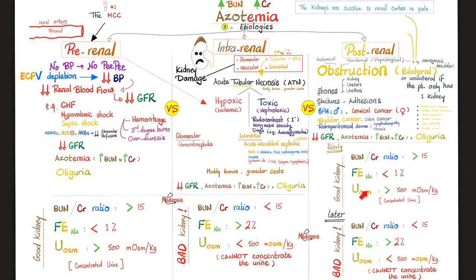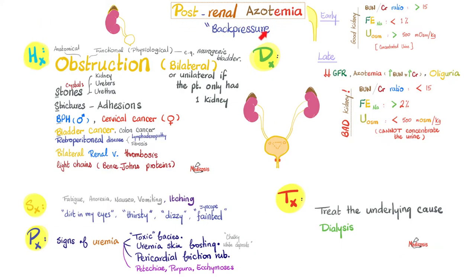Early on, the kidney itself is fine, giving you the features of a good kidney. But if not corrected, the back pressure destroys the kidney. When the kidney is struggling, it appears swollen yet pale, especially in the cortex, which contains the proximal convoluted tubules — the most active tubules. The obstruction could be anatomical, like a stone or stricture, or physiological — such as a neurogenic bladder that doesn't contract, which can occur in spinal cord injury, tertiary syphilis, or diabetes mellitus.